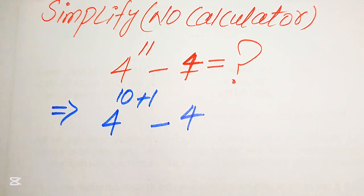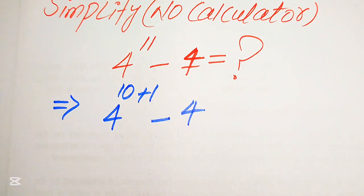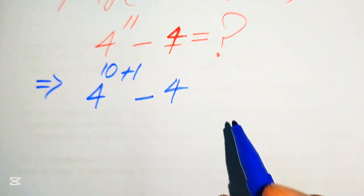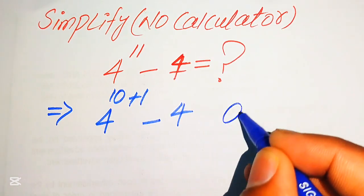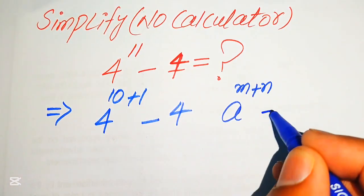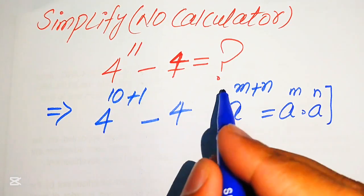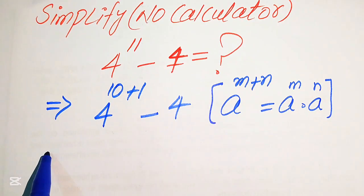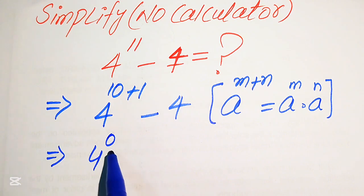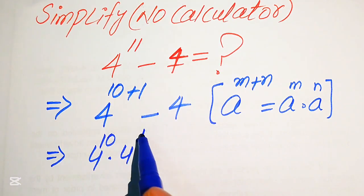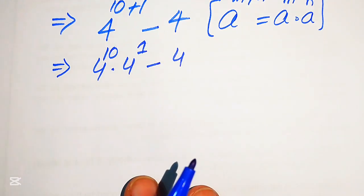In the next step we need to use the exponent law: a to the power of m plus n equals a to the power of m multiplied by a to the power of n. According to this exponent law, we break the exponent of this term and it will be written as 4 to the power of 10 multiplied by 4 to the power of 1, minus 4.